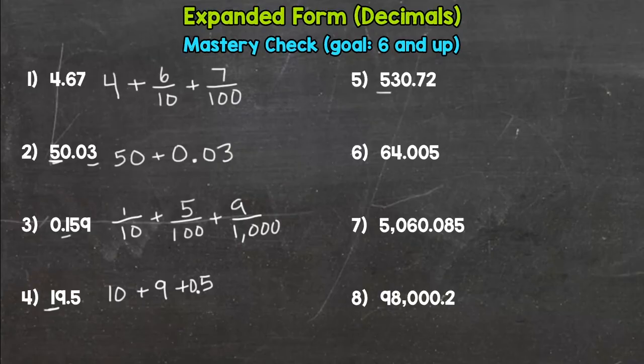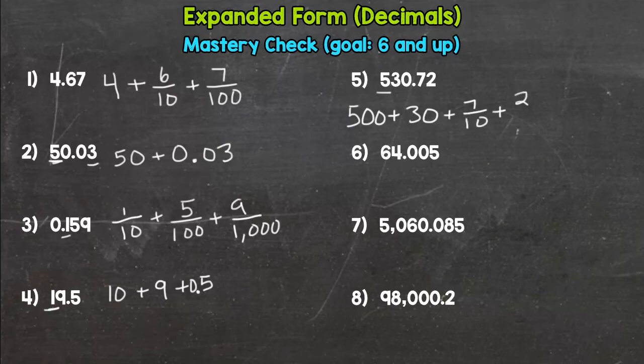Number five, we have a five up front with the value of five hundred plus a three worth thirty plus seven tenths and then a two worth two hundredths.